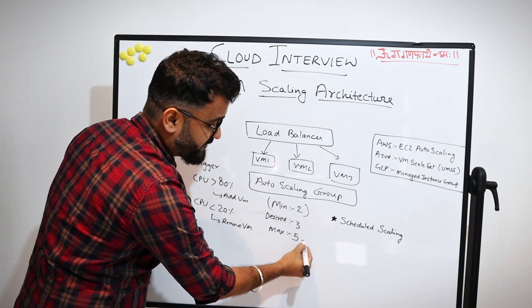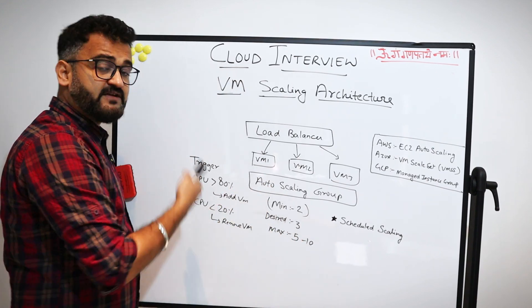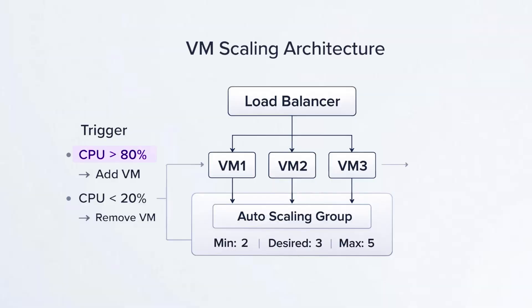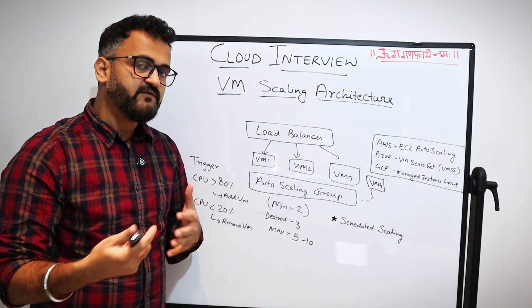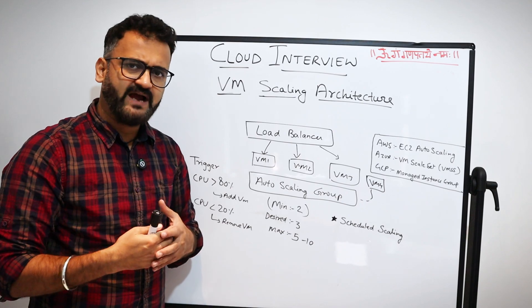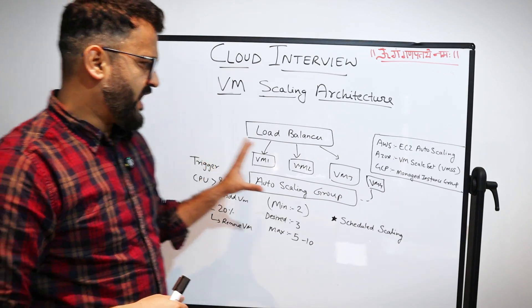You define a minimum of two VMs, a desired state of three, and a maximum of five or ten based on your requirements. The trigger could be CPU load — if CPU exceeds 80%, you add another VM; if it drops below 20%, you remove one from the auto scaling group. But this is very reactive in nature, and the interviewer would ask why you want to be so reactive.